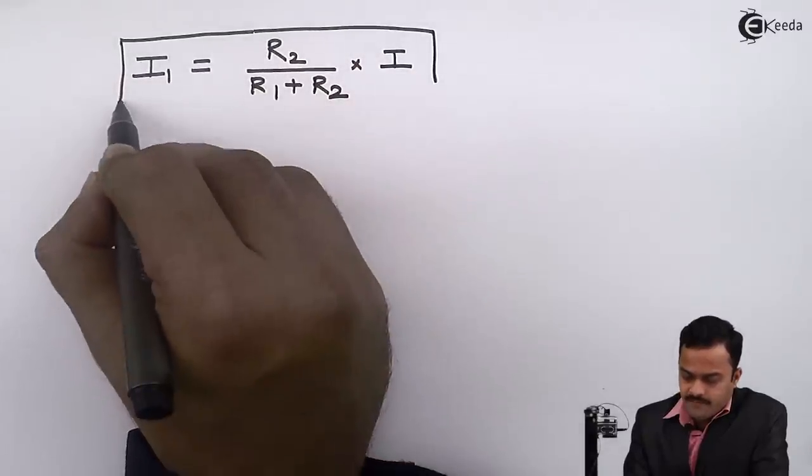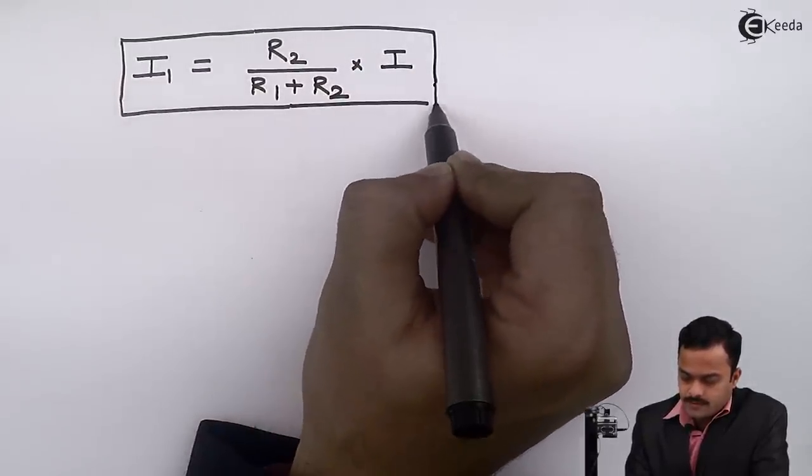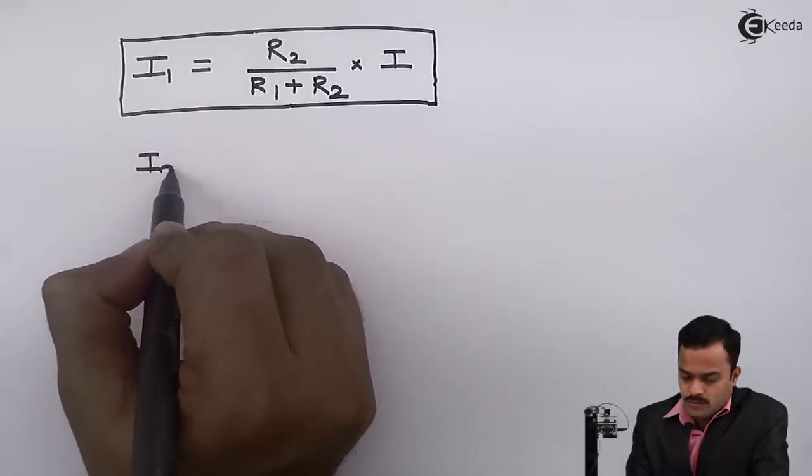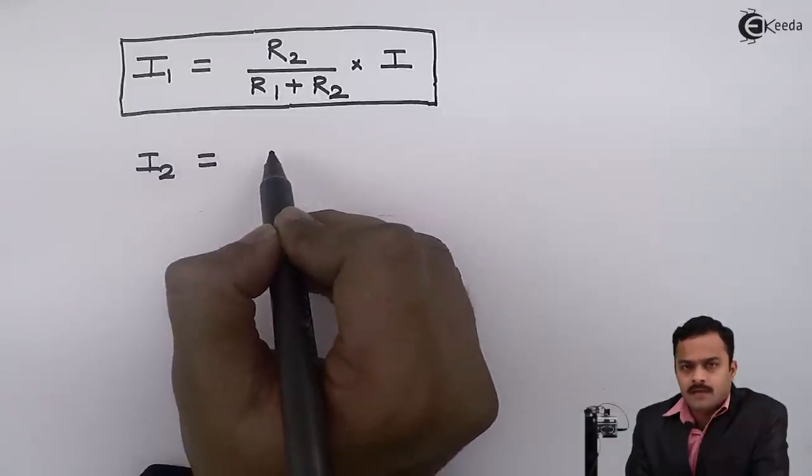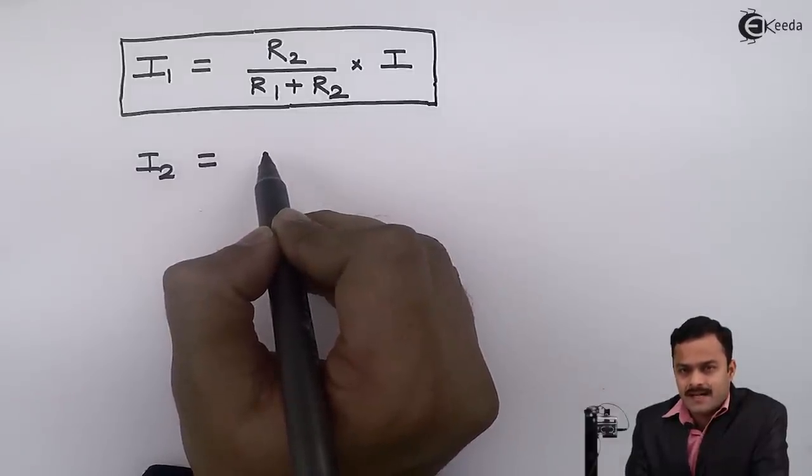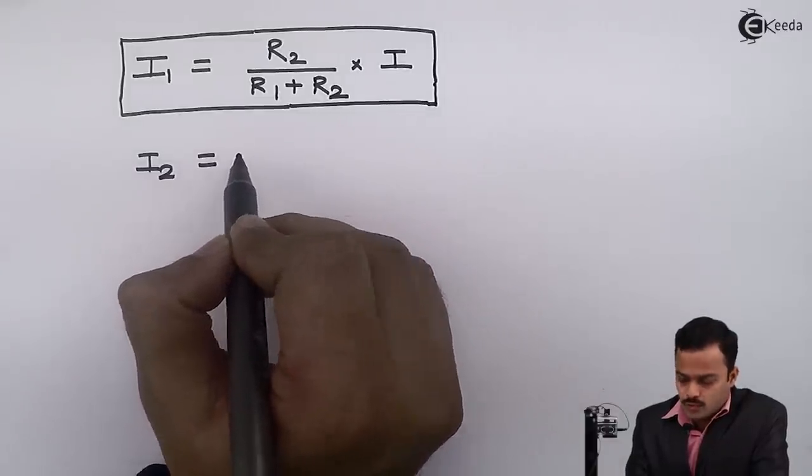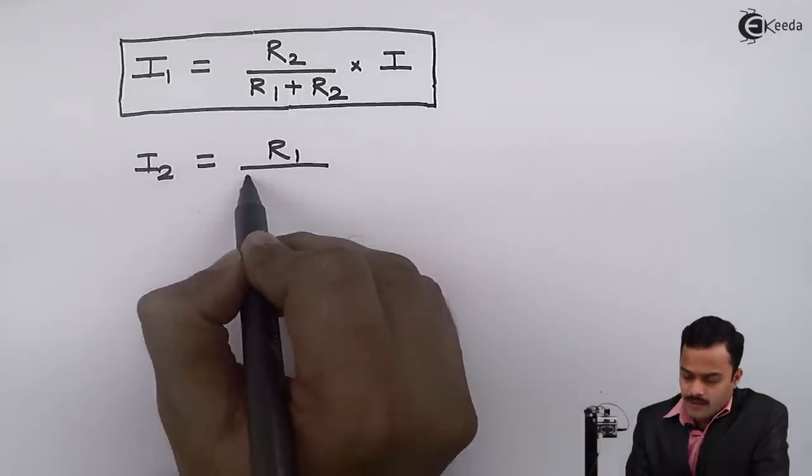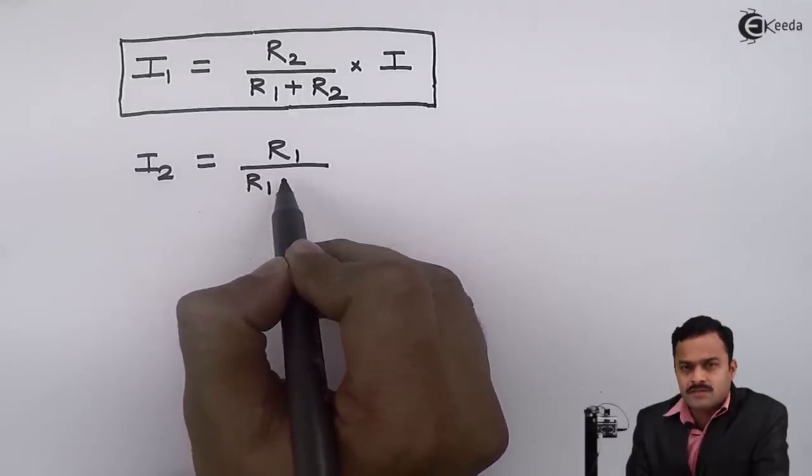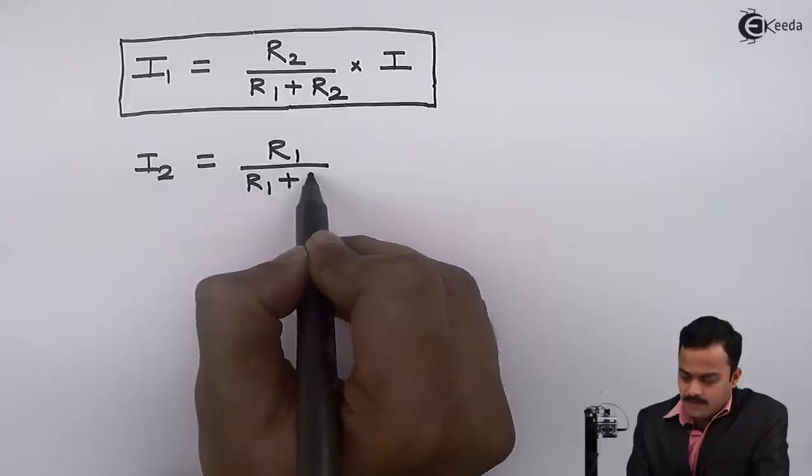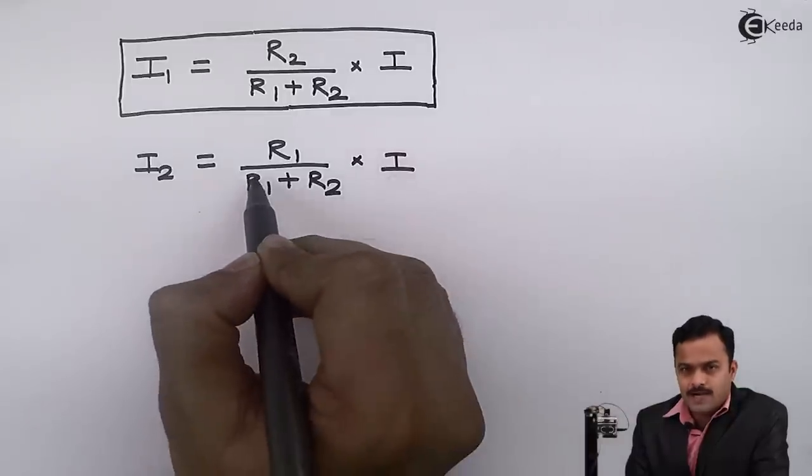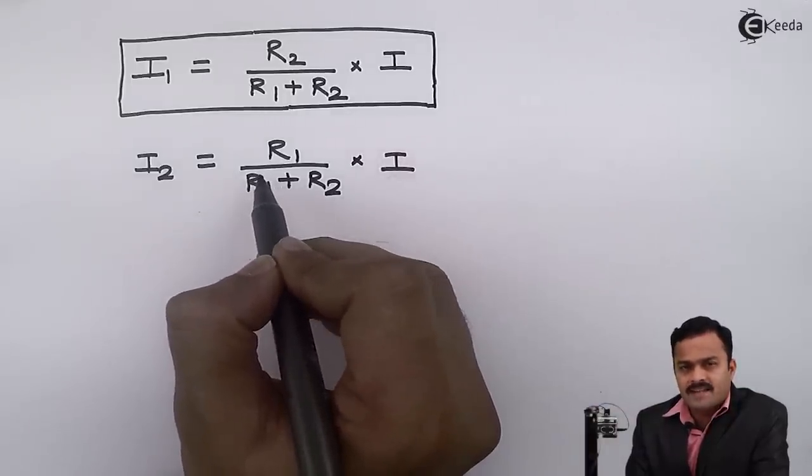Same way I can calculate current flowing through R2. Here it is R1 divided by addition of two resistances connected in parallel, multiplied by total current supplied by current source or battery.